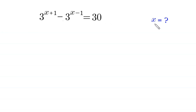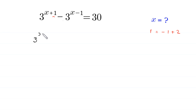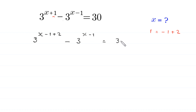So, let's start. This one can be written as: the exponent x plus 1 can be rewritten as x minus 1 plus 2. So we write this expression as 3 to the power x minus 1 plus 2, minus 3 to the power x minus 1, equal to 30.